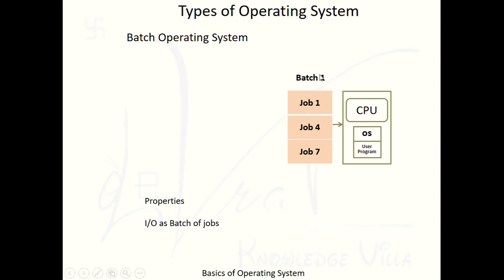First property: input and output as a batch of jobs. Whatever input we produce, we will produce it in the form of an entire batch instead of a single job. In the earlier system, we produced a single job as input, but here we are producing a set of multiple jobs as input, and we are calling it a batch.